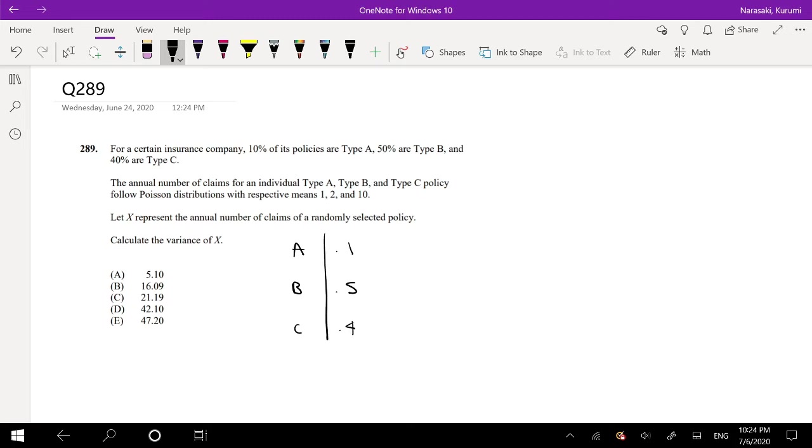Okay, and the annual number of claims for an individual type A, B, and C policy follows a Poisson distribution with respective means - so this is expectation - 1, 2, and 10.